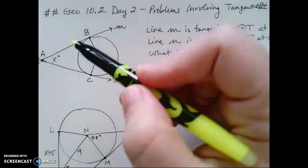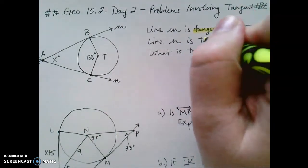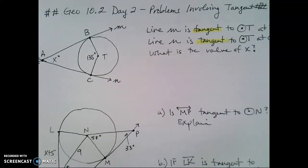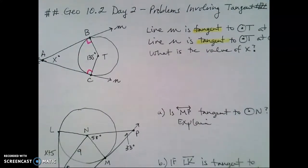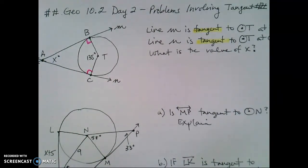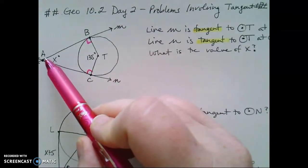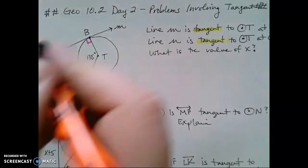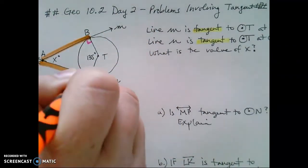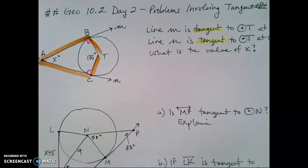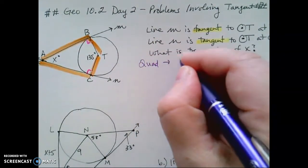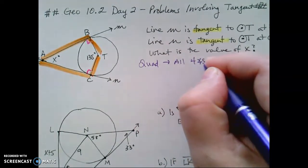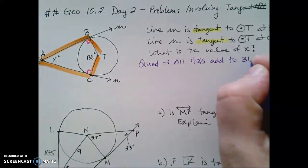So even though it's not marked in the figure, because we're told that these two lines are tangent, that means I do get to add something to my figure, which is that we are dealing with some right angles. Now, one of the things I'm going to pull out from a previous lesson is if I take a look at this figure, this is a quadrilateral.